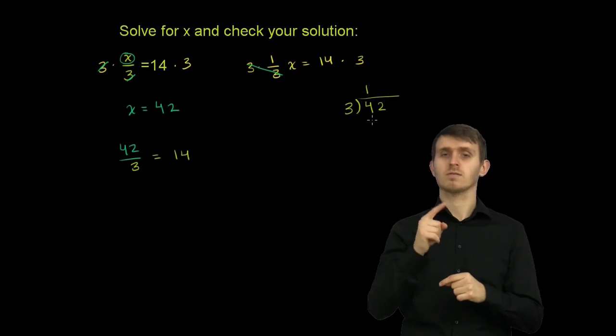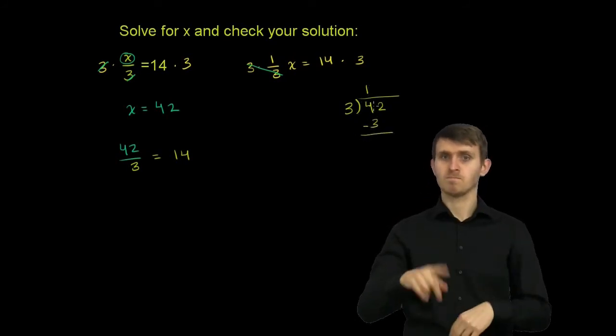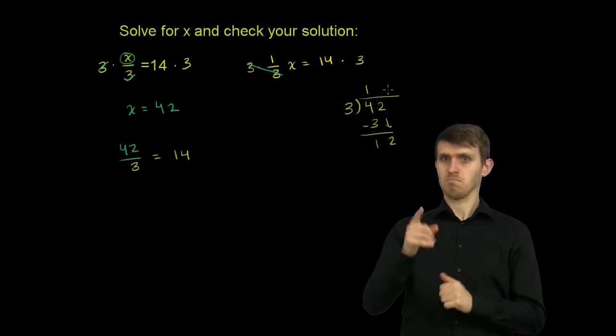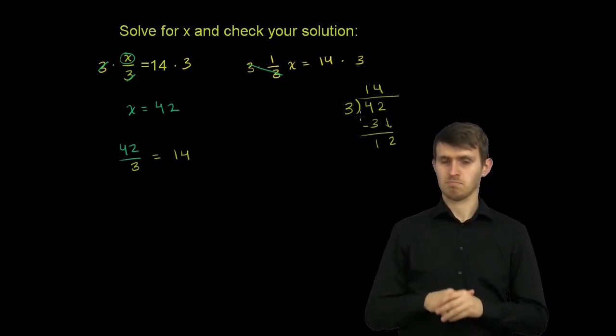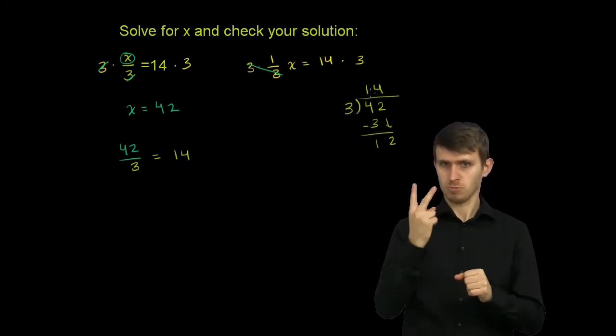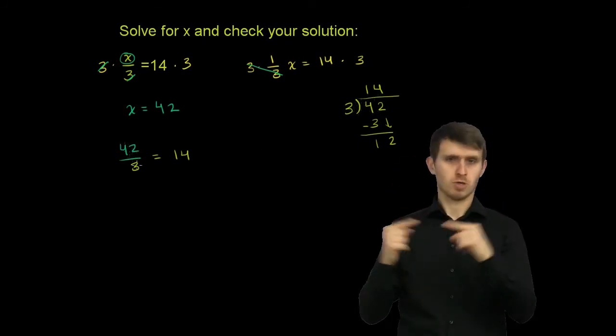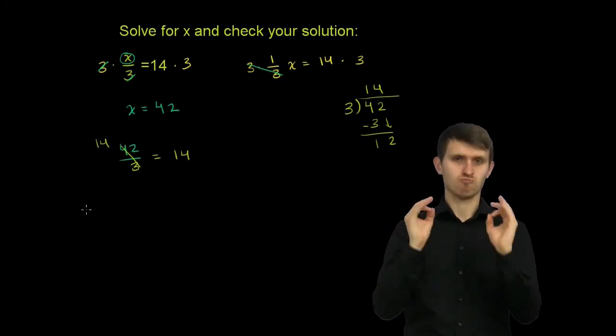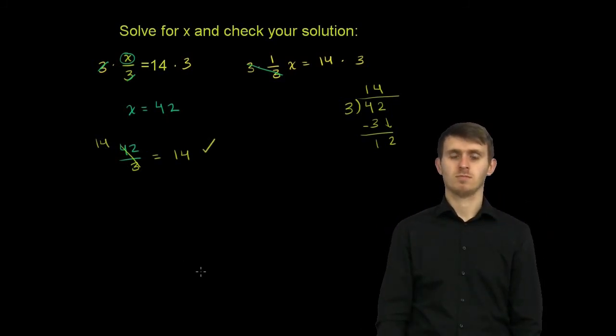3 goes into 4 one time. 1 times 3 is 3. You subtract. 4 minus 3 is 1. Bring down the 2. 3 goes into 12 four times. So 3 goes into 42 14 times. So this right over here simplifies to 14. And it all checks out. So we're done.